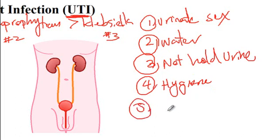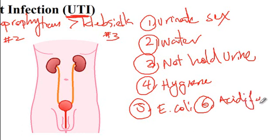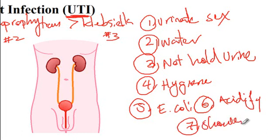Five: after a bowel movement, you must wipe from front to back, because if you wipe from back to front, you will spread bacteria — particularly E. coli — from the anus towards the urethra, whereas wiping front to back prevents bacteria from getting close to the urethra. Six: drinking cranberry juice as well as vitamin C supplements can help acidify the urine and prevent urinary tract infections. Seven: avoid bathing and take showers instead, as bathing can enhance the spread of bacteria to the urethra.